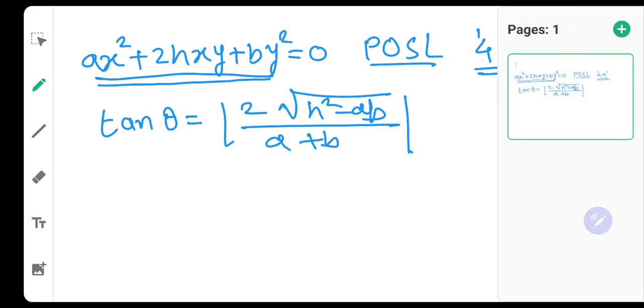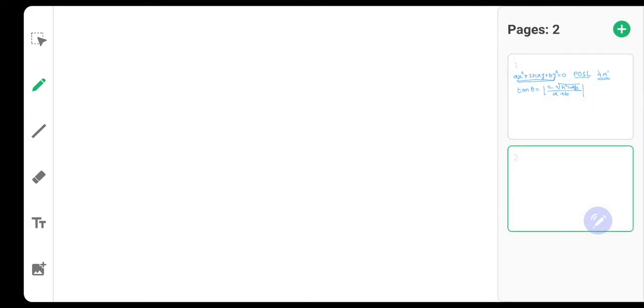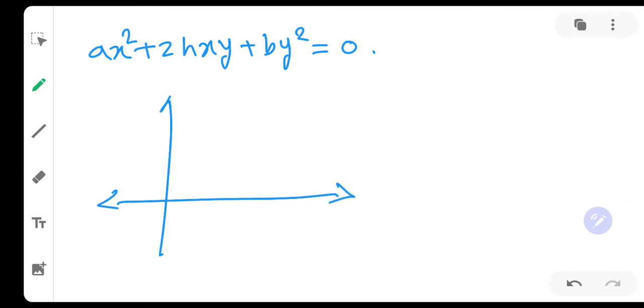So let us start proving this. Suppose I have a pair of straight lines passing through origin Ax² + 2Hxy + By² = 0. Then how do they look? Let us draw a Cartesian coordinate system. Then this pair of straight lines will have two lines, line L1 and line L2.